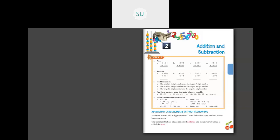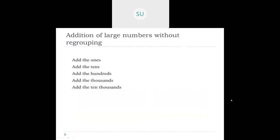Now we will see addition of large numbers without regrouping. Whenever you have large numbers to add, first you add the ones, then the tens, then hundreds, thousands, and ten-thousands. We are going to study addition up to ten-thousands. So you add starting from ones, then tens, hundreds, thousands, and ten-thousands.